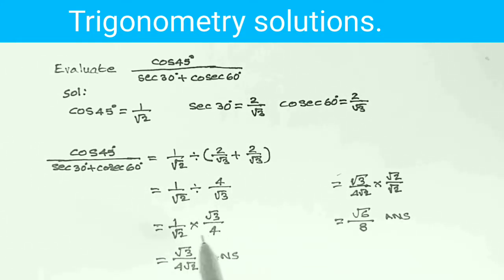1 into root 3 is root 3. Root 2 into 4 is 4 root 2. Answer: root 3 by 4 root 2.